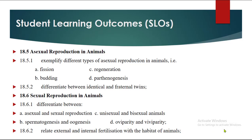The SLOs for this topic: first, asexual reproduction in animals — exemplify different types of asexual reproduction in animals, i.e., fission, budding, regeneration, parthenogenesis. Differentiate between identical and fraternal twins. Sexual reproduction in animals — differentiate between asexual and sexual reproduction, spermatogenesis and oogenesis, unisexual and bisexual animals, oviparity and viviparity. And the last SLO for today's lesson is: relate external and internal fertilization with the habitat of animals.